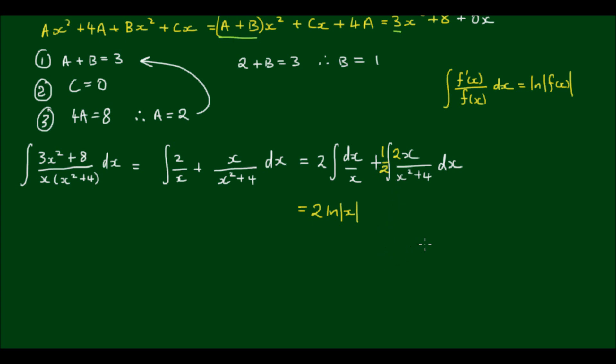So I can write a half, and then this integral is simply the natural log of x² + 4, or the mod of x² + 4. And because this is an indefinite integral, we have to add an integration constant, C.